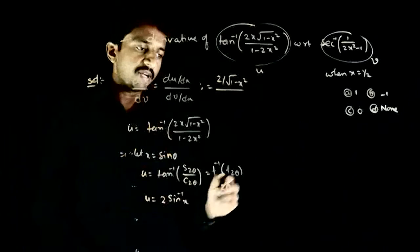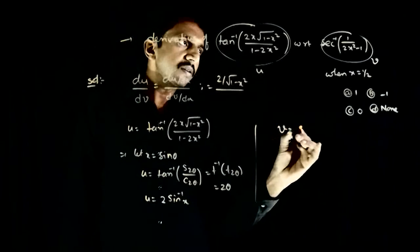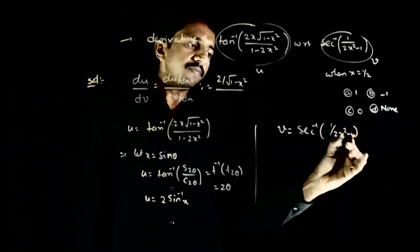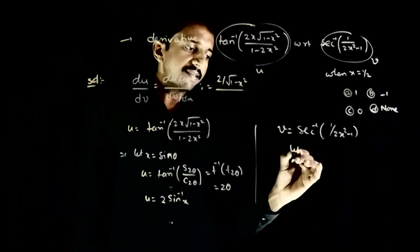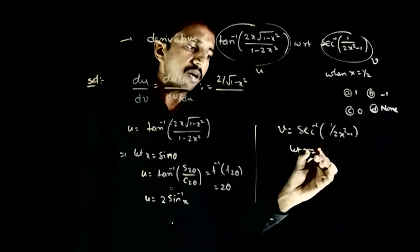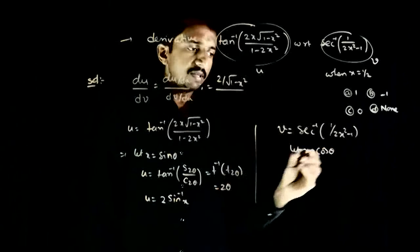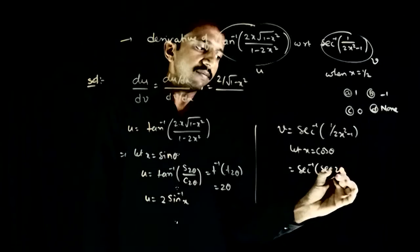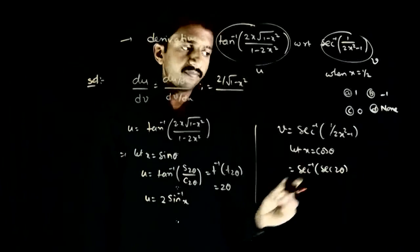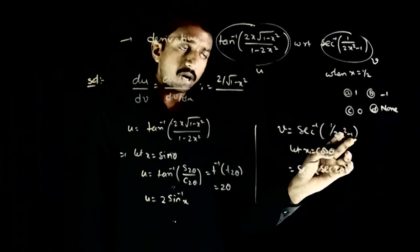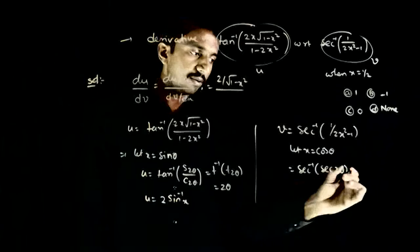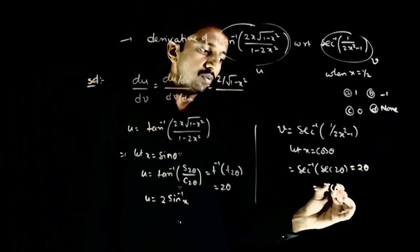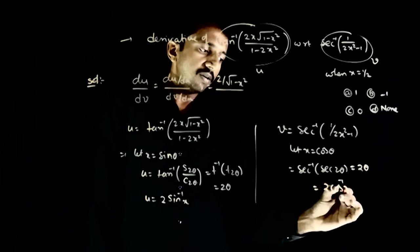Now v is secant inverse of 1 divided by 2x² minus 1. Let x = cos θ. This becomes secant inverse of secant 2θ, because 2 cos²θ minus 1 is cos 2θ, and 1 divided by cos 2θ is secant 2θ. That equals 2θ, which equals 2 cos⁻¹x.